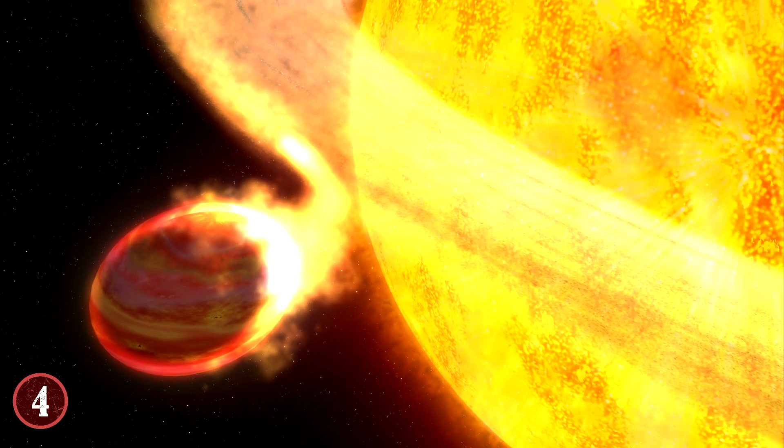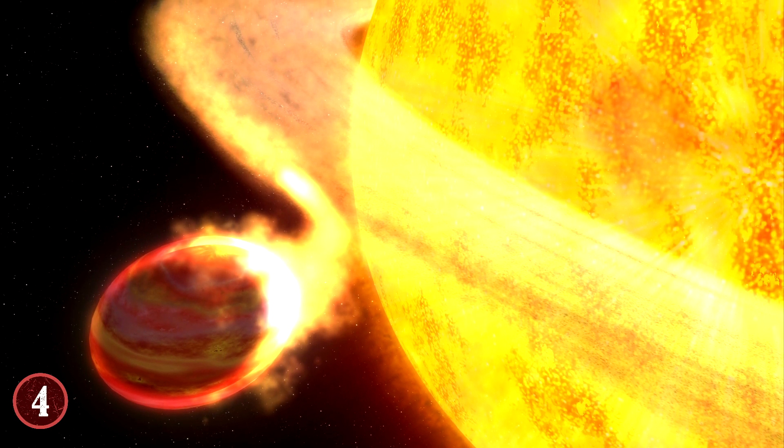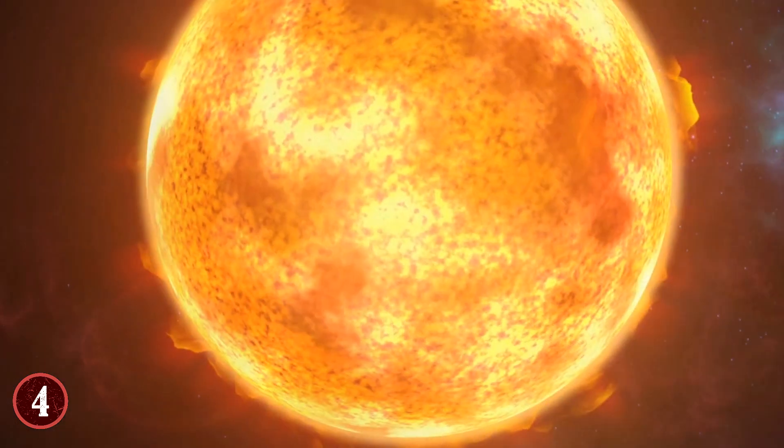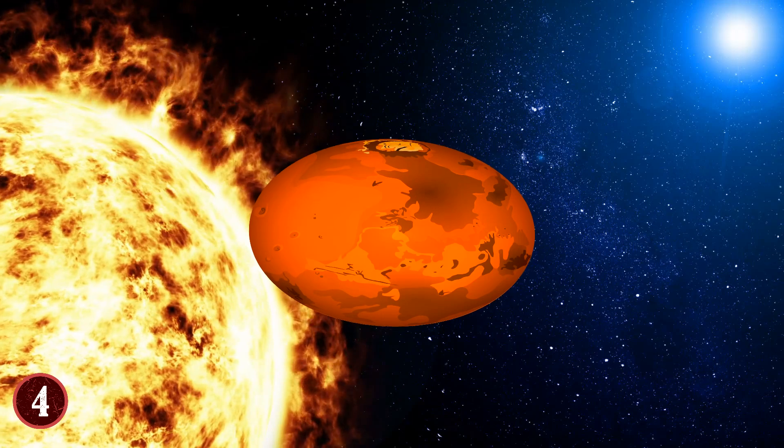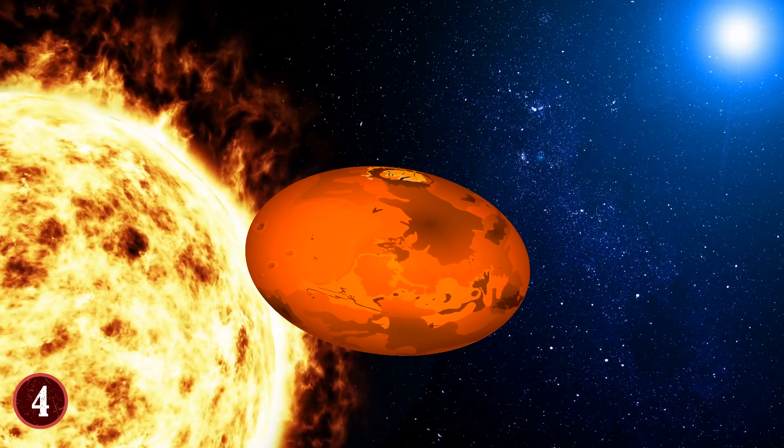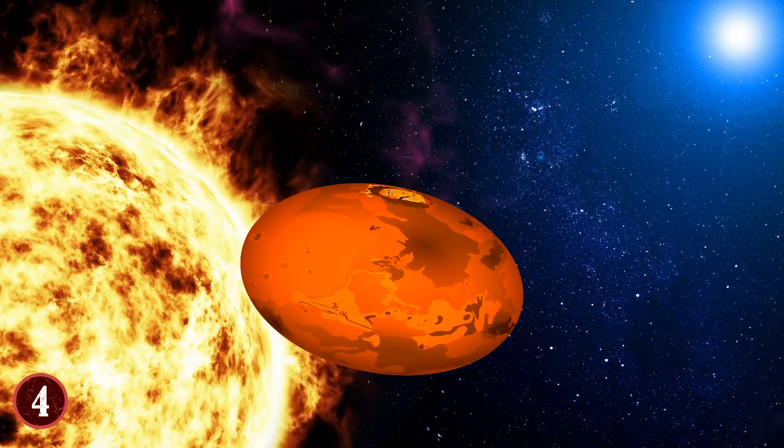The planet is egg-shaped due to the massive amount of gravity that the sun it encircles exudes. And this is only one part of the strangeness of this planet. Because the gravity isn't just elongating the planet, it's killing it. Worse, it's killing the planet slowly.